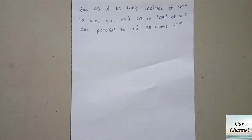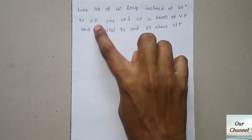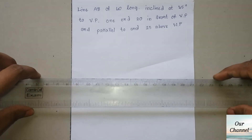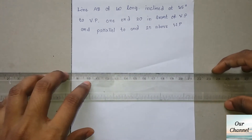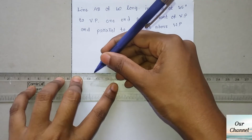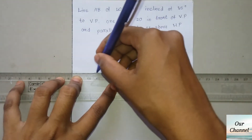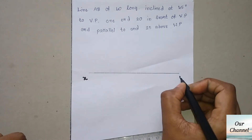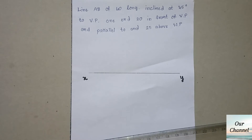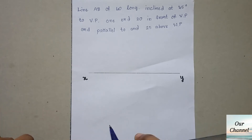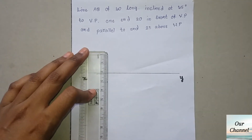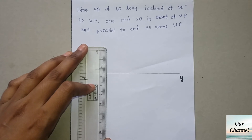Now the second case: a line inclined to VP and parallel to HP, inclined at 45 degrees to VP. This will be reversed compared to the first case. Draw the reference line XY. Here also we should assume that the given line is parallel to both planes. First draw 25 mm above HP — that is above XY — and draw a line parallel to XY.